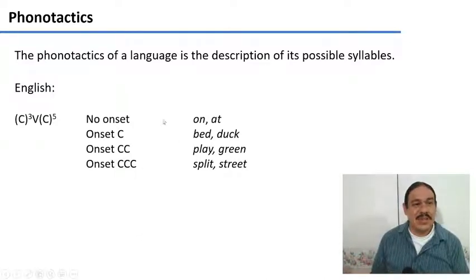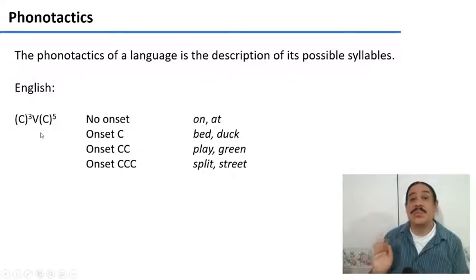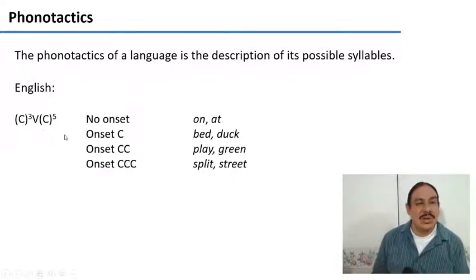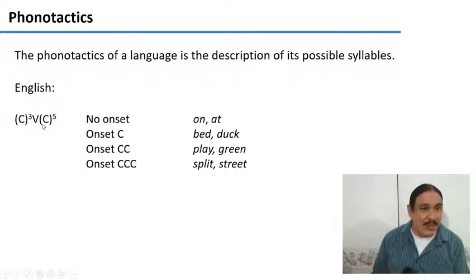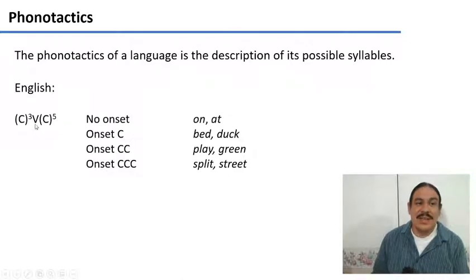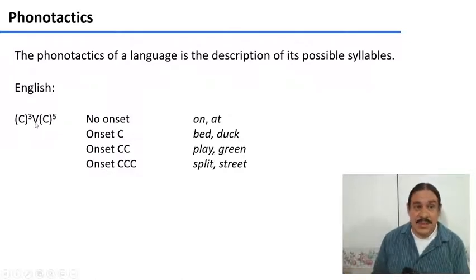Believe it or not, this little equation here is the description of all possible syllables in English. The only thing that every English syllable requires is a vowel-like object in it — it could be a simple vowel or it could be a diphthong. Beyond that, the parentheses here indicate that these are optional components.